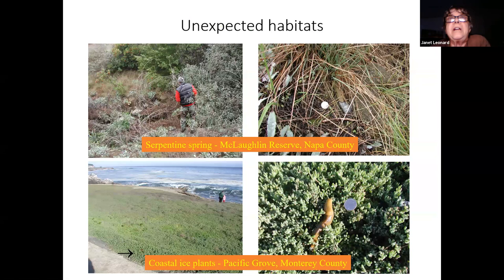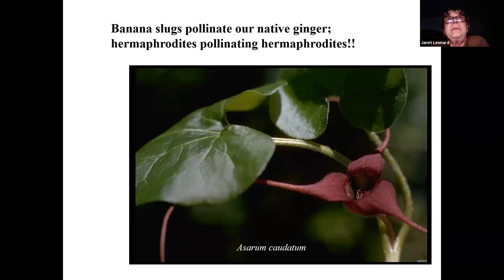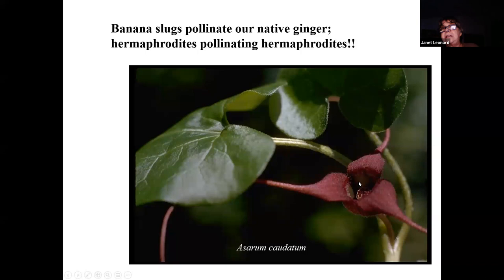They're also found in other habitats. Here, for example, is a picture of a banana slug in a serpentine spring habitat in Napa County. They're also found right up to the coast — here they are in Pacific Grove. I have found them at Pillar Point Harbor and at Año Nuevo, right on the cliff just above the tidal spray. One of the things we know about banana slugs' role in the ecosystem is that they're the major pollinator of our native ginger, which is a hermaphroditic plant. Banana slugs are hermaphrodites, so we have a case of hermaphrodites pollinating hermaphrodites. Native ginger is a low-growing plant and its flowers appear under the leaves, just about head height to a banana slug.